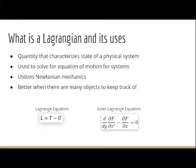Here are the two relevant equations: the Lagrangian equation, which is L equals T minus U, where T is kinetic energy and U is potential energy, and the Euler-Lagrange differential equation, which will be derived next time.